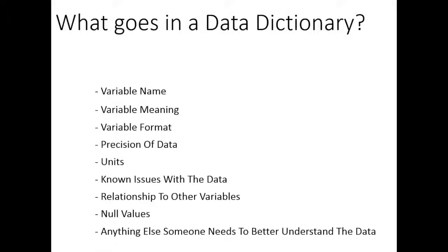So there are a lot of reasons to use a data dictionary, but what exactly is one? A data dictionary goes through variable by variable, or column by column for your spreadsheet, and says: here's the variable name, here's what the variable means and how we collected this data, here's the format of the variable, here's the precision, here are the units. For example, this data is in grams instead of ounces — that's a really important distinction and something you want to put in your data dictionary.